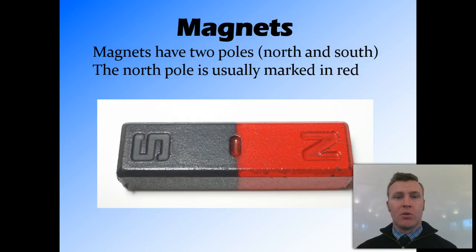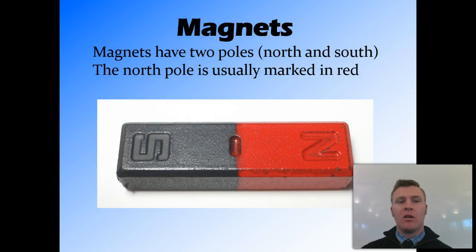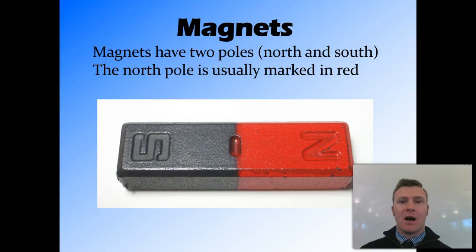Magnets have two poles: a north pole and a south pole. Most magnets that you use, the north pole will be marked. It might be marked in red, or it might just have a stamp with N or a stamp with a dot showing you which one is the north pole.